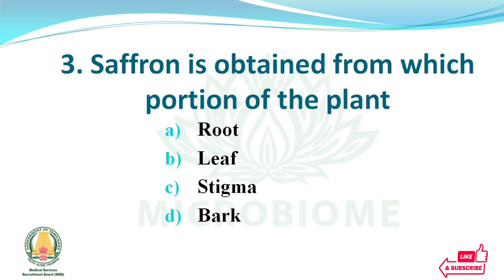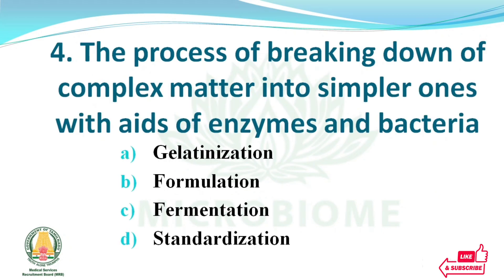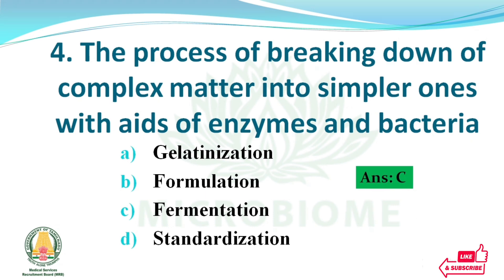Saffron is obtained from which portion of the plant? The options are root, leaf, stigma, bark. The right answer: option C, stigma. The process of breaking down complex matter into simpler ones with the aid of enzymes and bacteria is called — options: gelatinization, formulation, fermentation, standardization. The right answer: option C, fermentation.